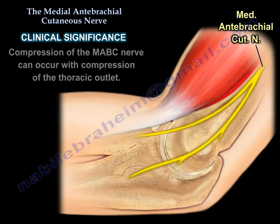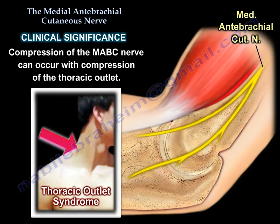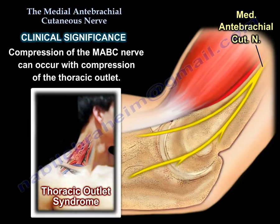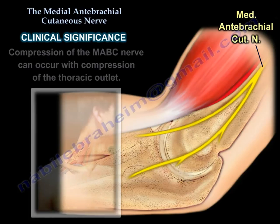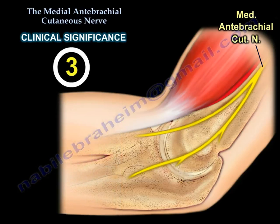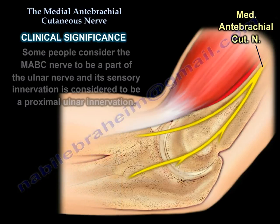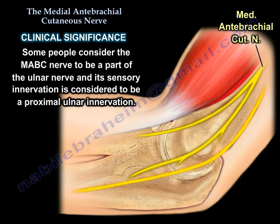Number 2: Compression of the Medial Antibrachial Cutaneous Nerve can occur with compression of the thoracic outlet. Number 3: Some people consider that nerve to be part of the ulnar nerve, and its innervation field is considered to be a proximal ulnar innervation.